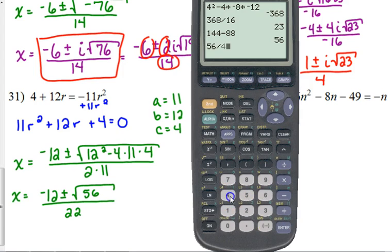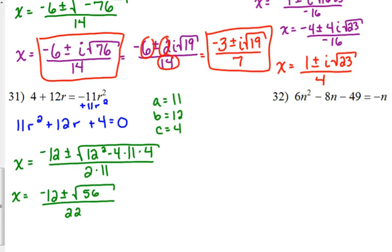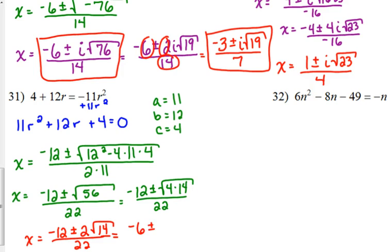Let's see here. 56 is divisible by 4. What did that just say? 4 times 14. And so we've got negative 12 plus or minus 2 square roots of 14 over 22. All of those are divisible by 2, except you do not touch what's under the radical. The only way you can change what's under the radical is if you split it up into factors. You can only change it if you can split it up into factors.